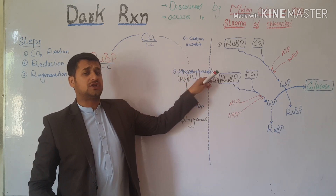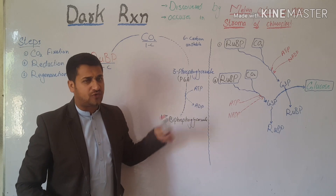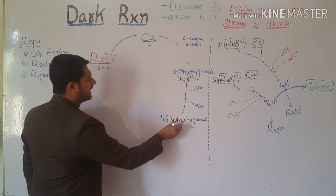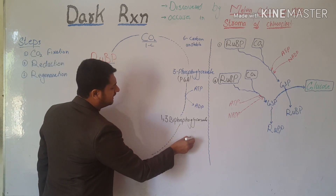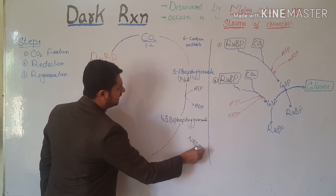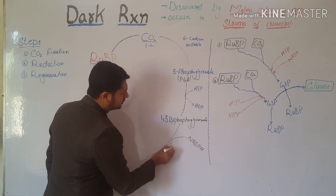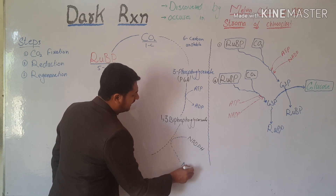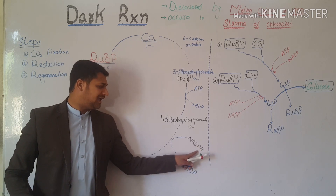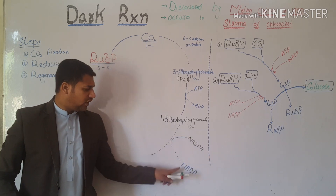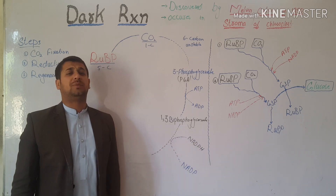Now comes the second step: carbon reduction. The NADPH produced during the light reaction enters into this step. NADPH donates its hydrogen and becomes oxidized back to NADP⁺, losing its hydrogen. Meanwhile, 1,3-bisphosphoglycerate becomes reduced in this step.